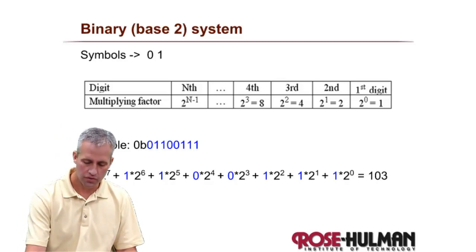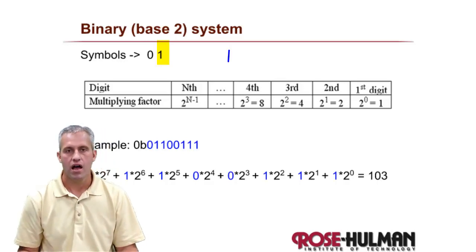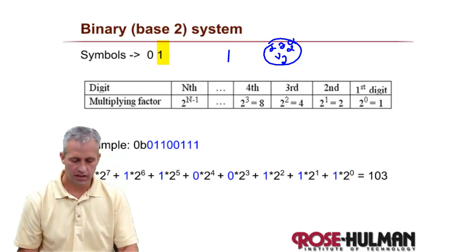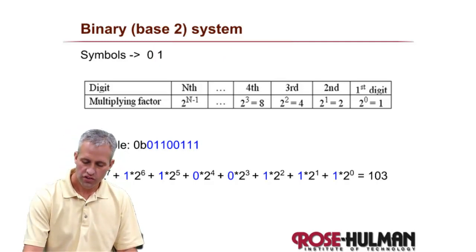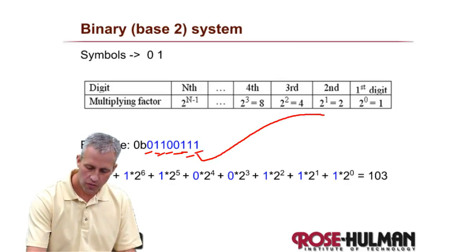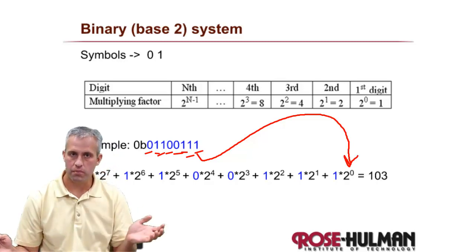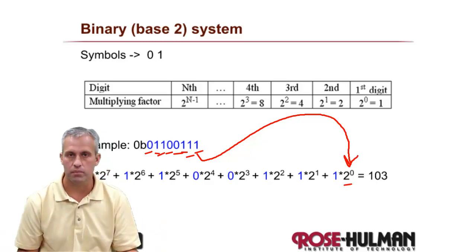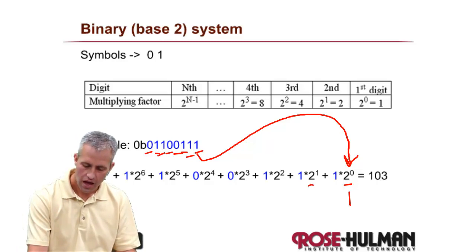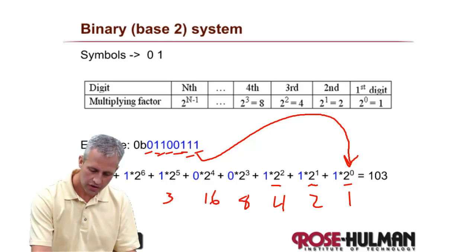Binary only uses two symbols. Zero represents no items and one represents one item — like on Sesame Street they might draw it in cookies. Just like decimal, binary uses locations to determine the multiplying factor. The far right position is multiplied by the base, which is two, raised to the power of zero — that's just one. Then two to the first is 2, then 4, 8, 16, 32, 64.